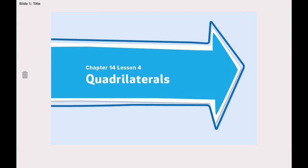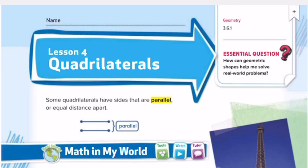Remember, quadrilaterals are polygons that have four sides and four angles. Let's explore together. Let's open page 851 and look at our first vocabulary word: parallel. What does parallel mean? We know that some quadrilaterals have sides that are parallel or equal distance apart.